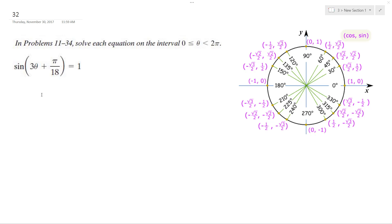Solving this problem, first thing we're going to do is take the inverse cosine of both sides, so we get 3 theta plus pi over 18 equals pi over 2 plus 2 pi k. The reason I have 2 pi k is so when we manipulate it, we can get all the variables between 0 and 2 pi, or all the solutions.